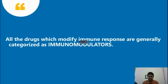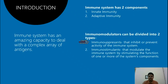So what are immunomodulators? All the drugs which modify immune response are generally categorized as immunomodulators. The immune system is made up of a network of cells, tissues and organs that work together to protect the body. The immune system has an amazing capacity to deal with a complex array of antigens. The immune system has two components: innate immunity and adaptive immunity. Innate immunity is also known as natural immunity, whereas adaptive immunity is also known as acquired immunity.